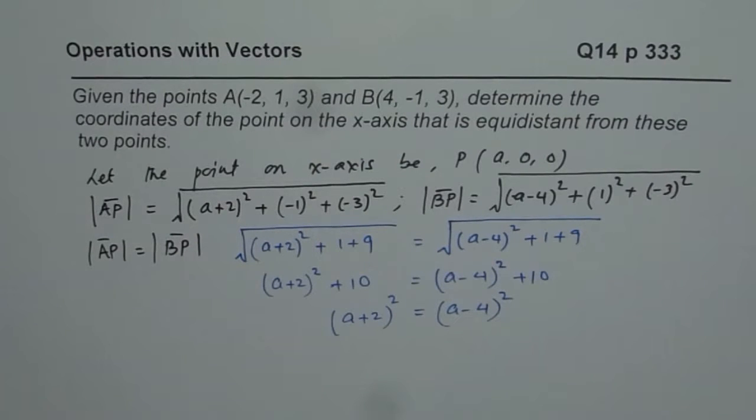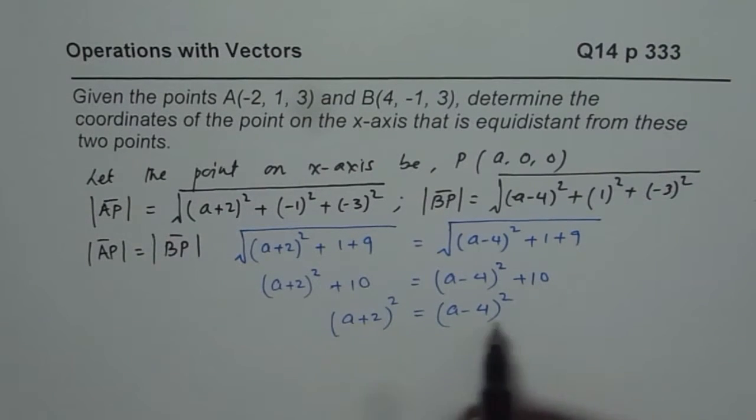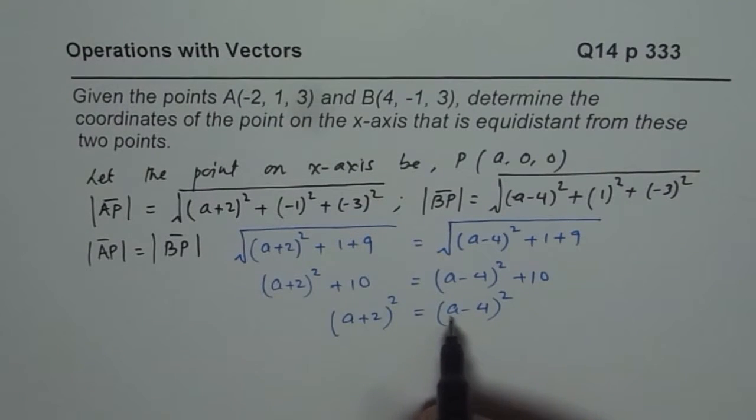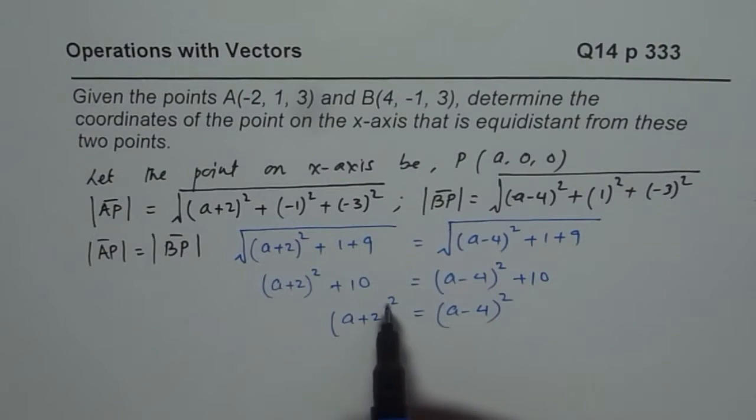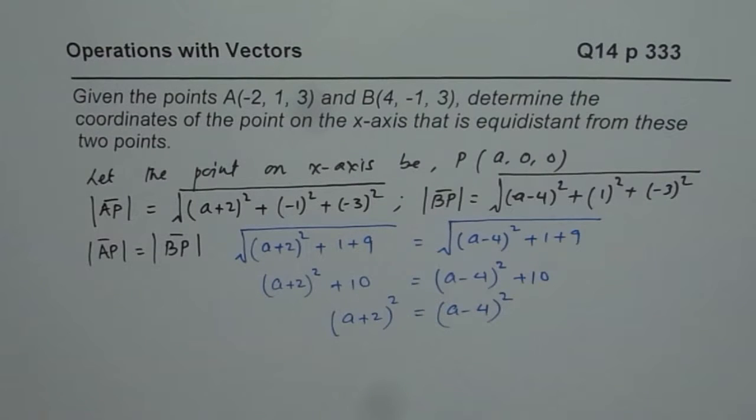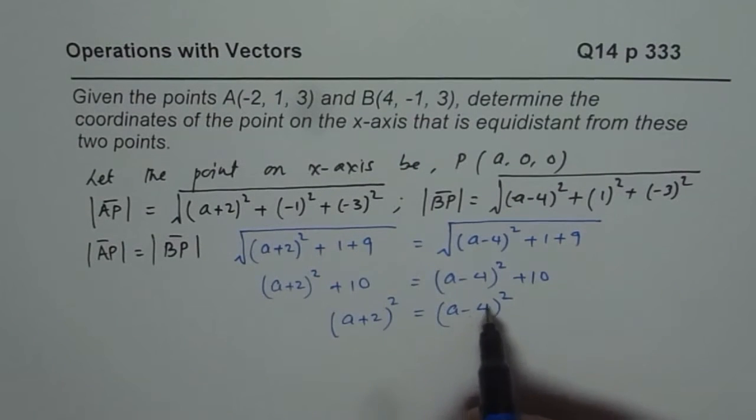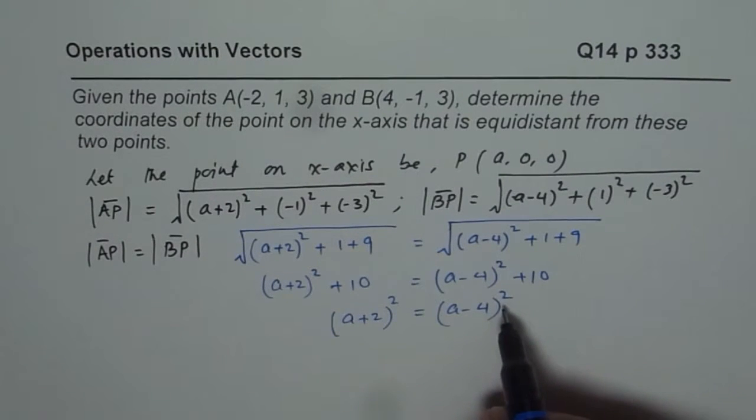So you get two numbers, two solutions for this: (a + 2)² and (a - 4)². Some of you at this stage can just get rid of squares and say a + 2 equals to a - 4 and get one of the solutions. In that case, you might do a mistake. There could be two points which are going to give us the solution. Since we square it, one of them could be negative also.